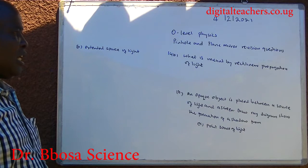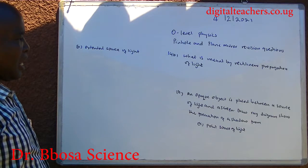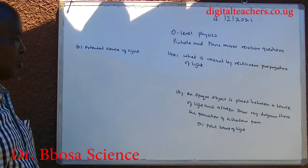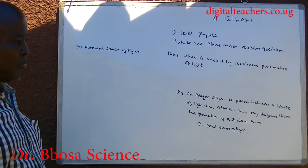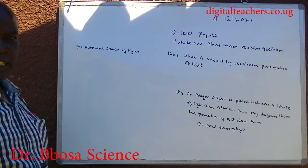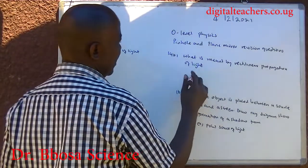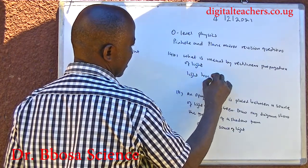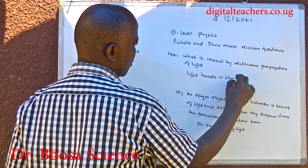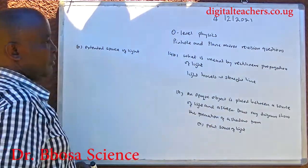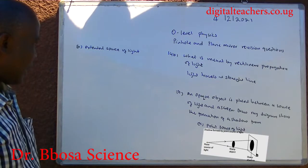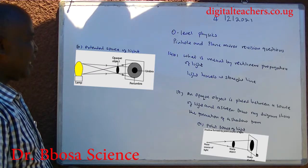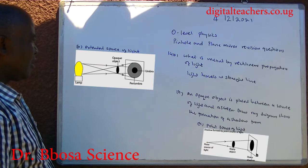Number fourteen A: what is meant by rectilinear propagation of light? B, an opaque object is placed between a source of light and a screen. Draw a ray diagram to show the formation of a shadow from A, a point source of light, and B, an extended source of light. Rectilinear propagation of light means that light travels in a straight line. A shadow formed from a point source is uniformly dark. A shadow formed from an extended source of light is dark in the center — umbra — and lighter on the outside — penumbra.